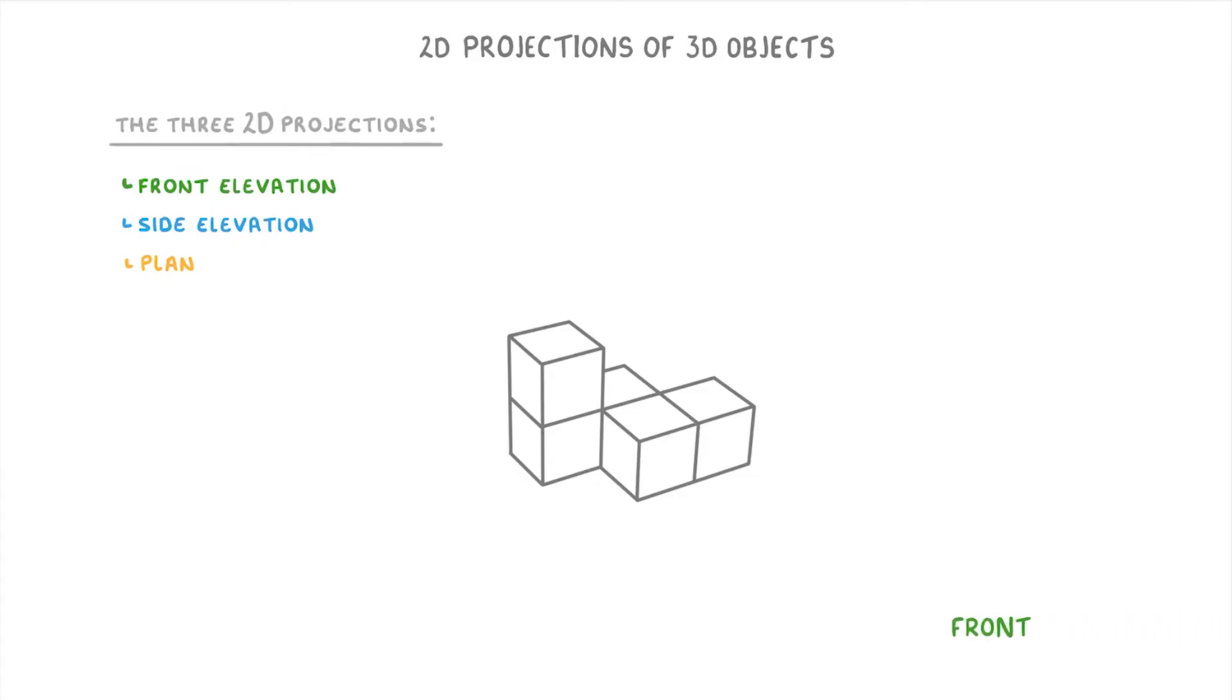The front elevation is just what your object would look like if you were looking at it from the front. So if you imagine that you were looking at it from this angle, you would only be able to see these 4 faces that are directly facing you, and so you'd basically just see a block like this.